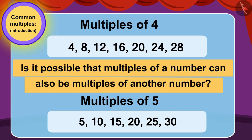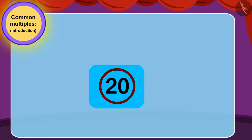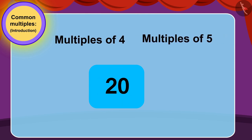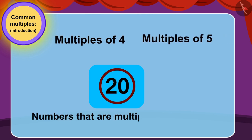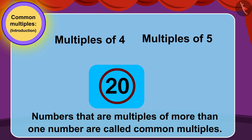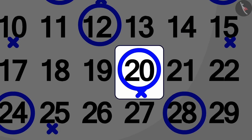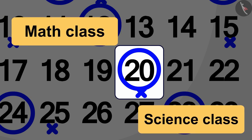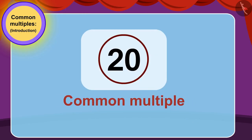Yes, it is quite possible that a number is a multiple of more than one number. Numbers that are multiples of more than one number are called common multiples. Here, on the 20th, Bablu will have both mathematics and science classes. In other words, 20 is a common multiple of both 4 and 5.